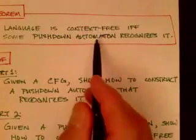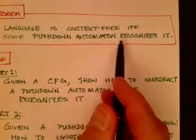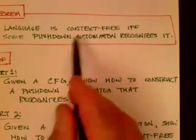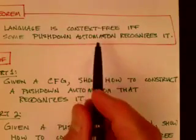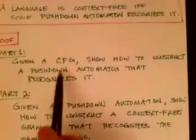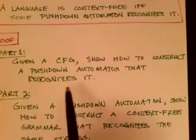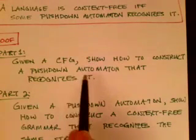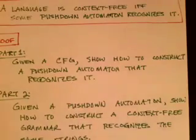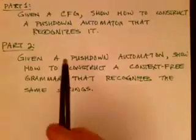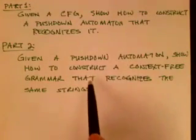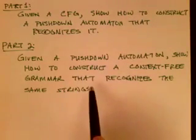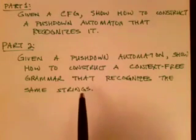We have to go both directions. If it's context-free, we have to show that there's a pushdown automaton that recognizes the language. And conversely, if it's a language recognized by a pushdown automaton, then we have to show there's a context-free grammar for it. Part one: given the context-free grammar, show that there is a pushdown automaton. Part two: given a pushdown automaton, show how to construct an equivalent context-free grammar that recognizes the same set of strings.